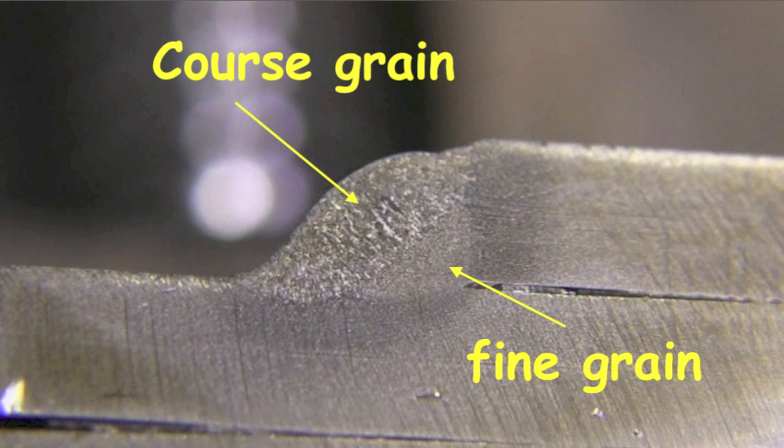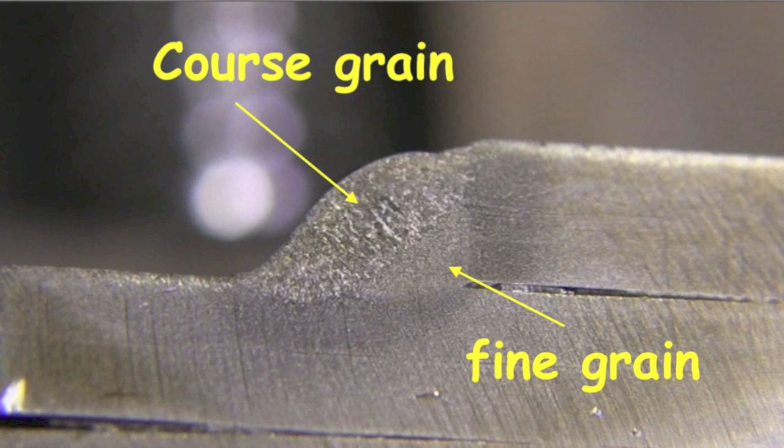Before I wrap this video up, I'm going to stir the pot just a little bit here with a true or false question: true or false, 7018 rods are low hydrogen rods and need to be kept in an oven.